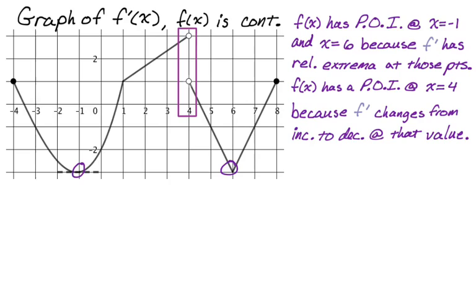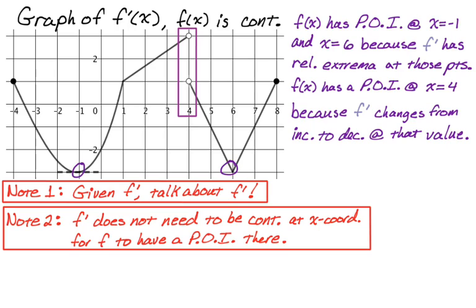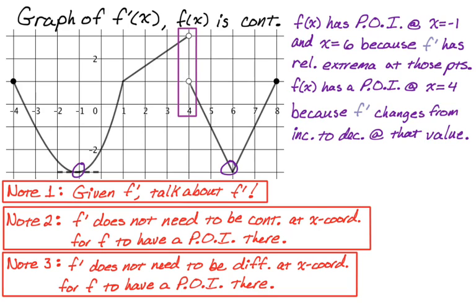There are three things to point out on this type of problem. First, if you are given the graph of f prime, talk about f prime — don't try to talk about f double prime. Second, f prime does not need to be continuous at an x coordinate for f to have a point of inflection there — that's the case at x equals four, the weird part of the graph. Third, f prime does not need to be differentiable at an x coordinate for f to have a point of inflection there — an example of that is x equals six. That's how we can justify points of inflection. I hope you found this helpful, and good luck.